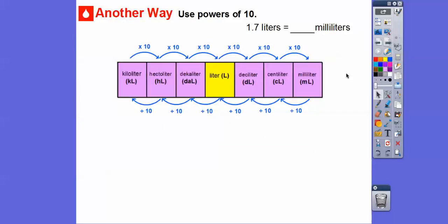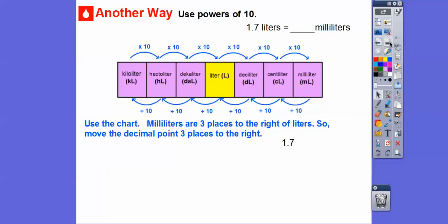Another way: we're going to use the powers of 10. Remember when we go to the right we multiply by 10, when we go to the left we divide by 10. 1.7 liters to milliliters—since that's three places to the right, we're just going to move that decimal place three places to the right: one, two, three. That's going to add a couple of zeros in there and we get 1,700 milliliters.